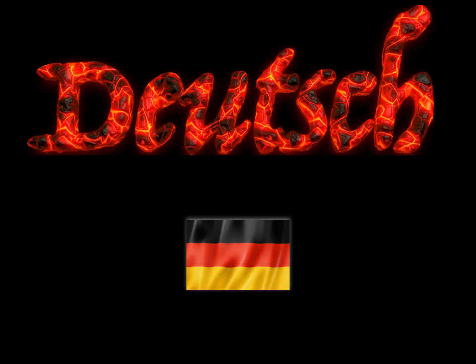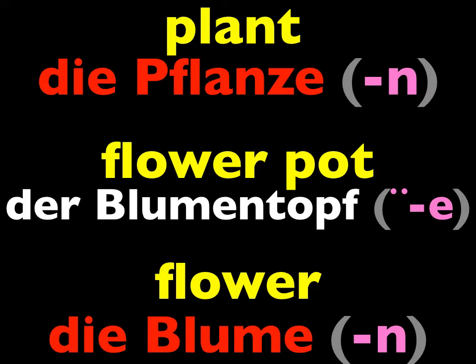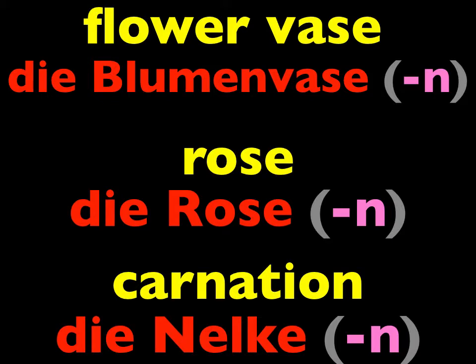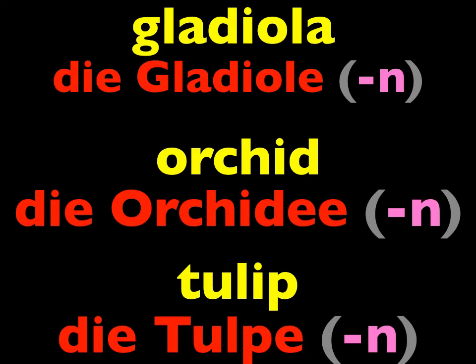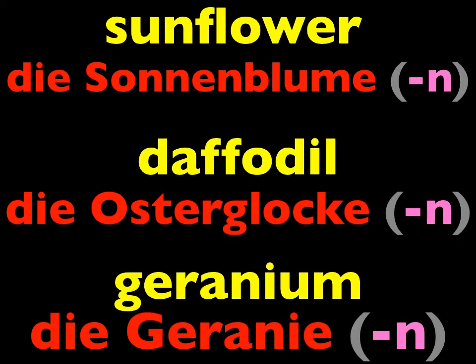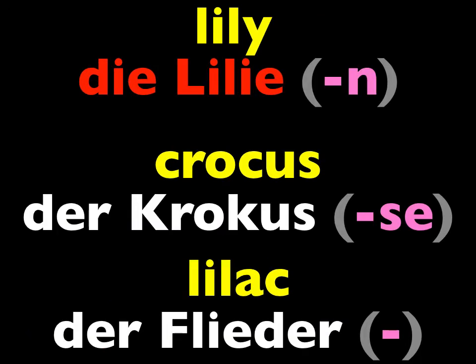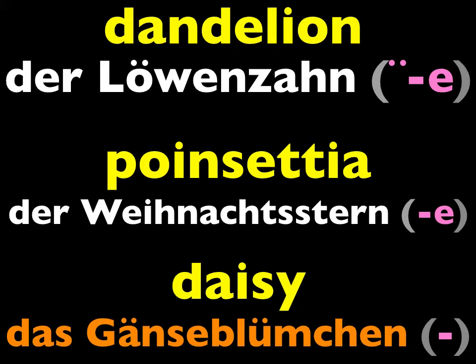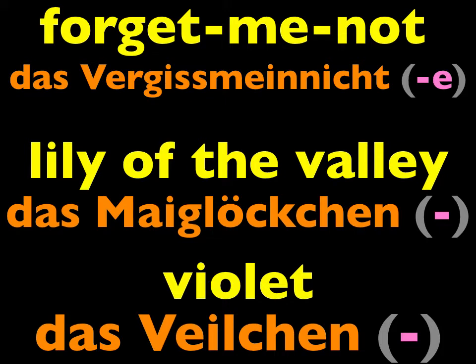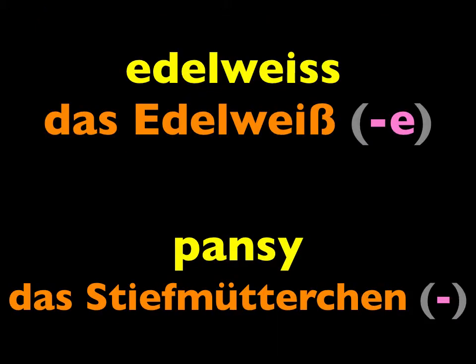Today we'll practice flower vocabulary from the last lesson. First, repeat the words we learned. Now let's use this vocabulary in sentences for practice. Repeat the sentences after me in German, and feel free to pause each slide to give you a chance to read the English translation.